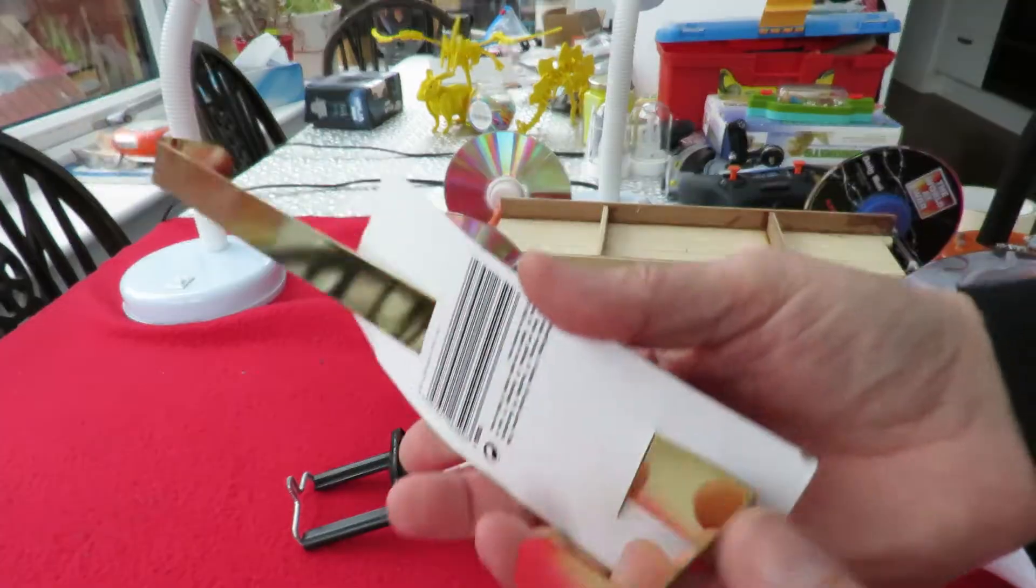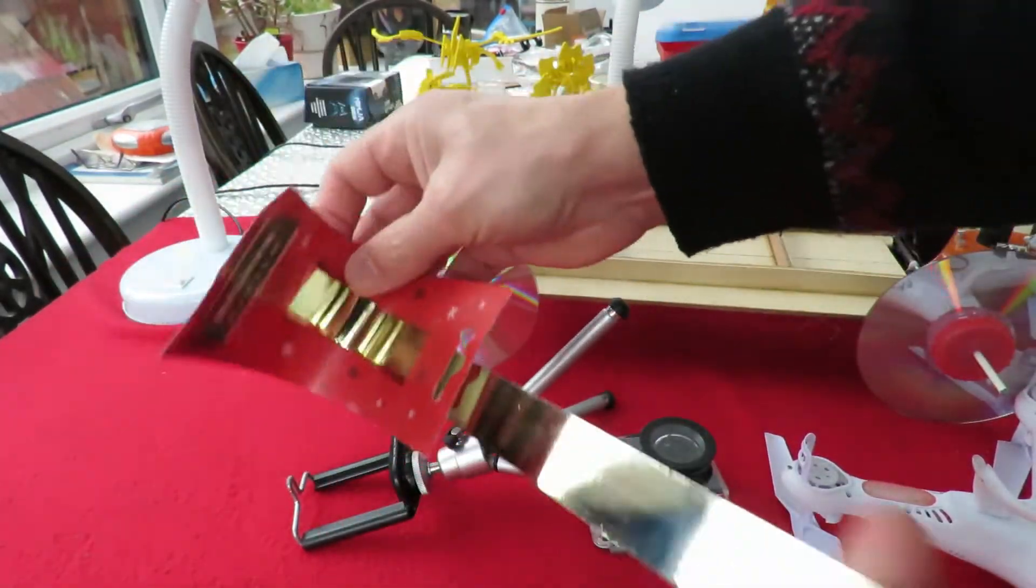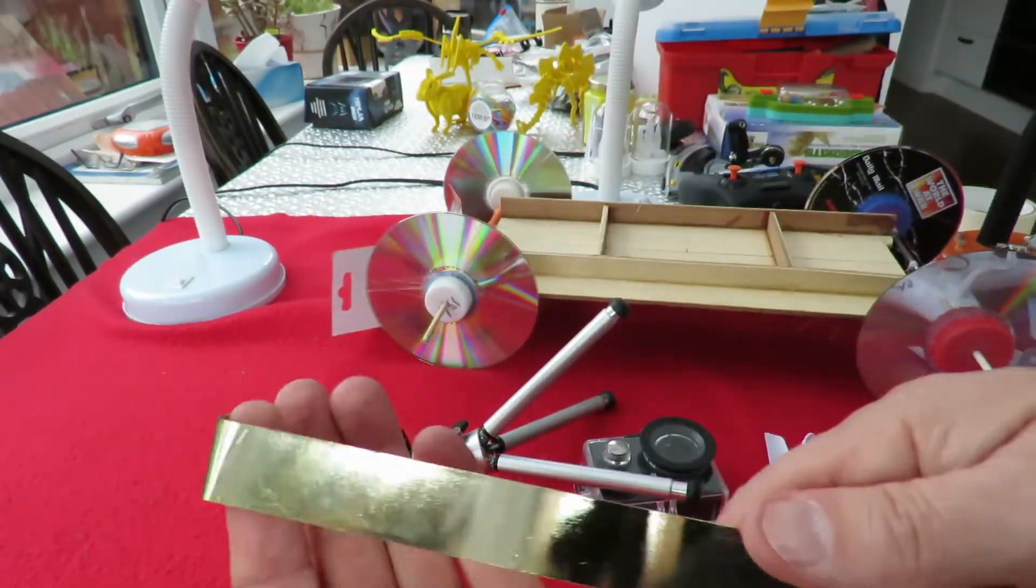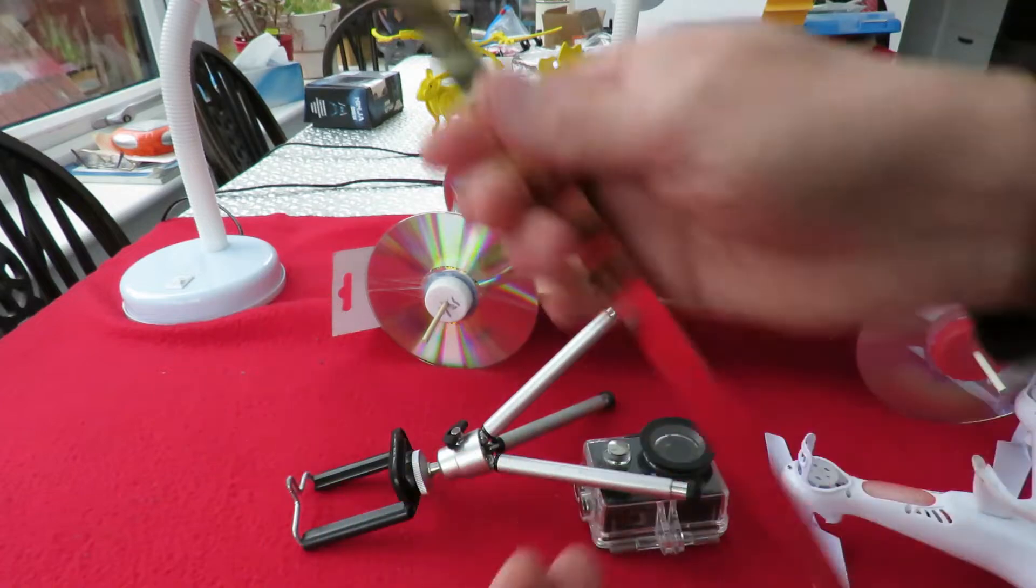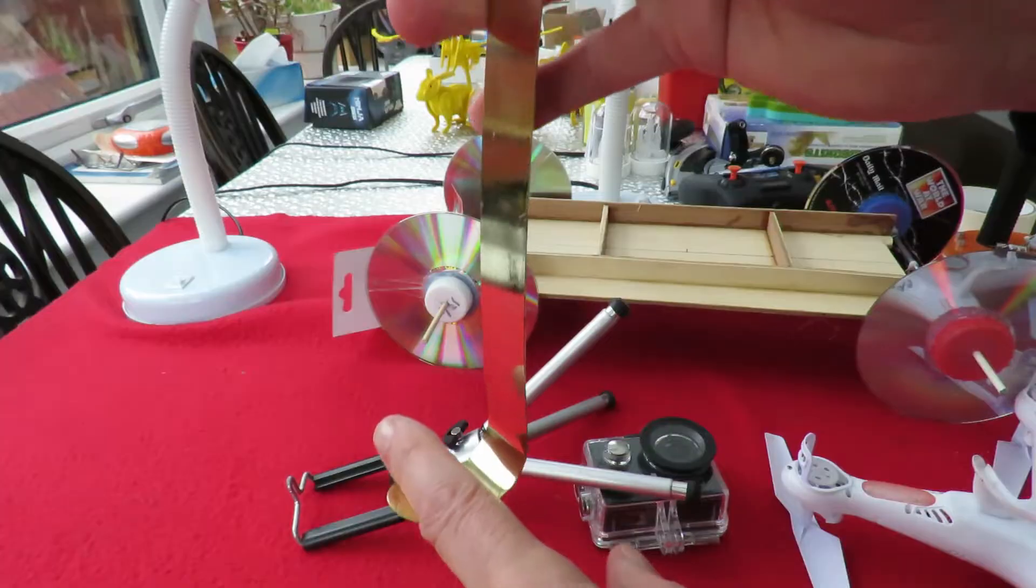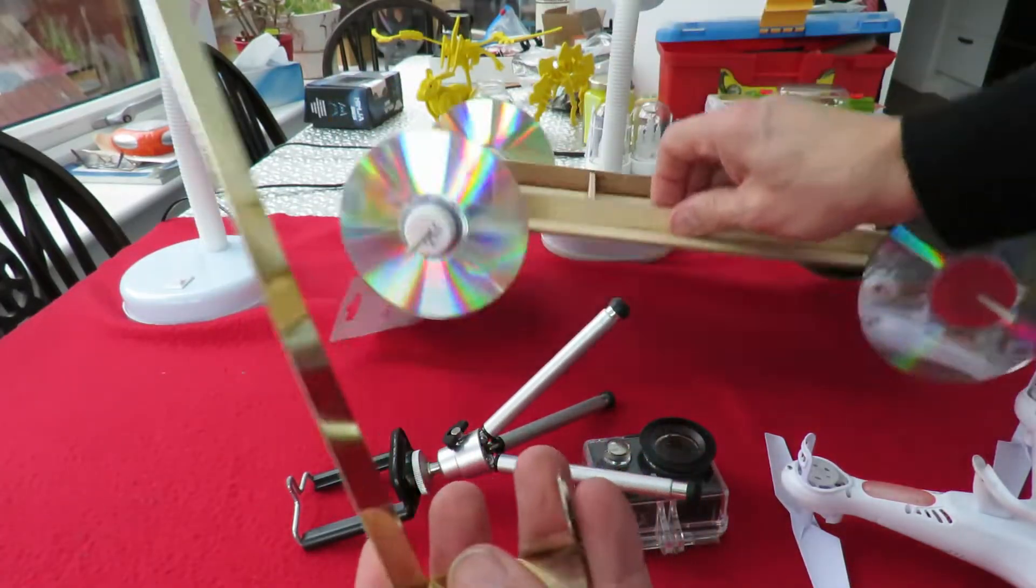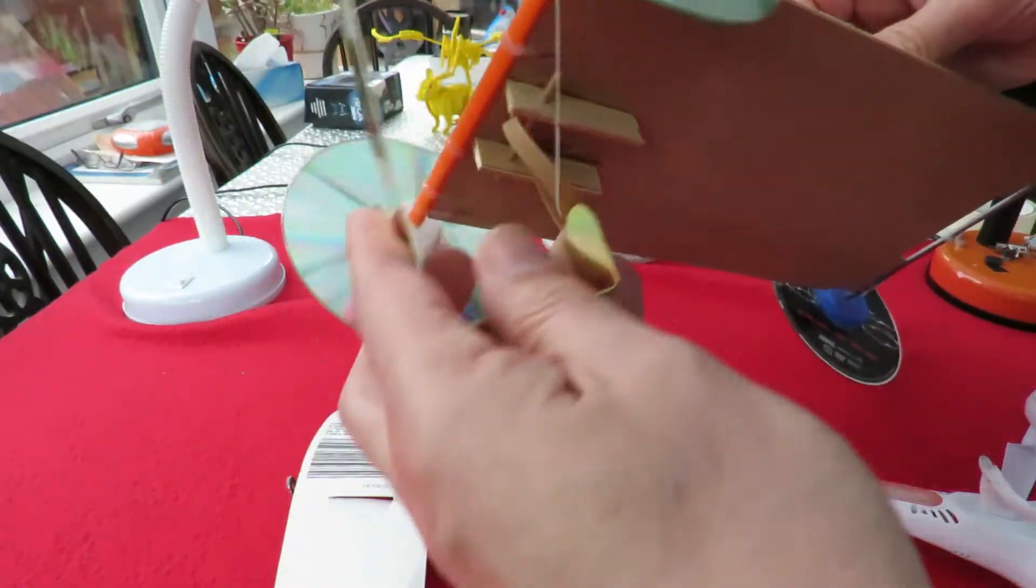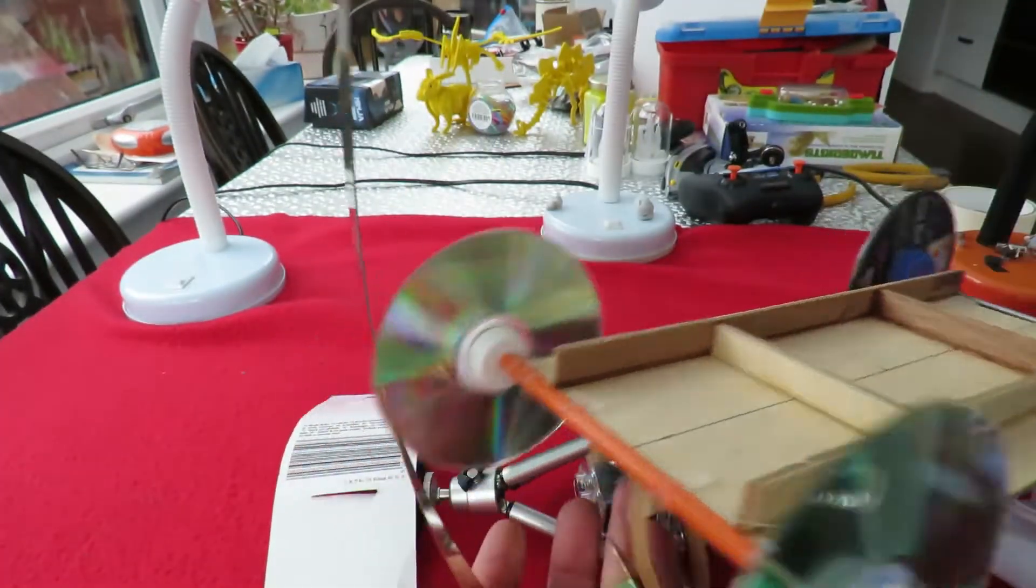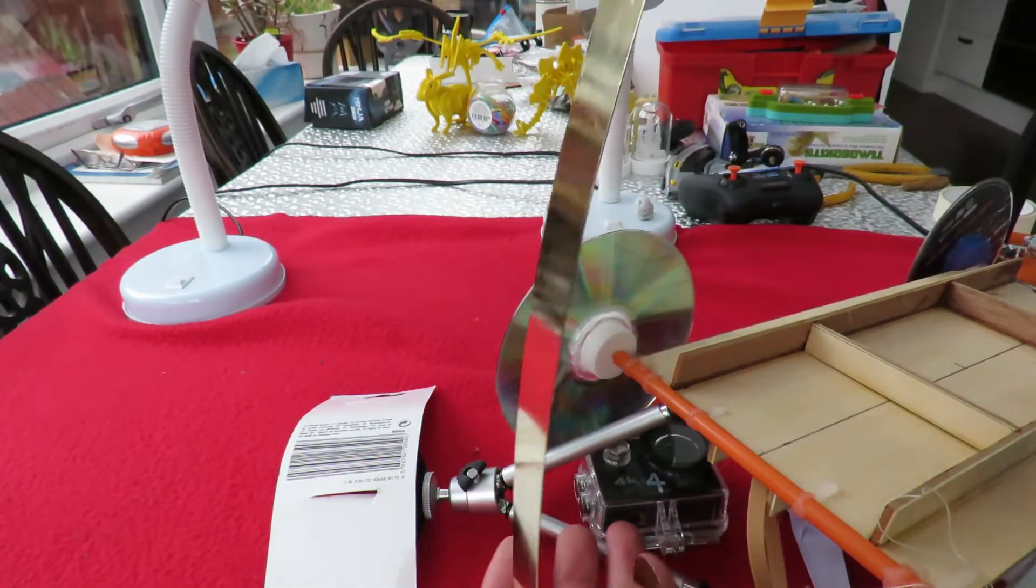So very simply this is a springy bit of metal. It's designed to hang over your door and then you hang your Christmas festive wreath on the hook there and all I'm going to do is figure out a way of attaching it to the front of the car here. So we can then use this springy effect to power the car.